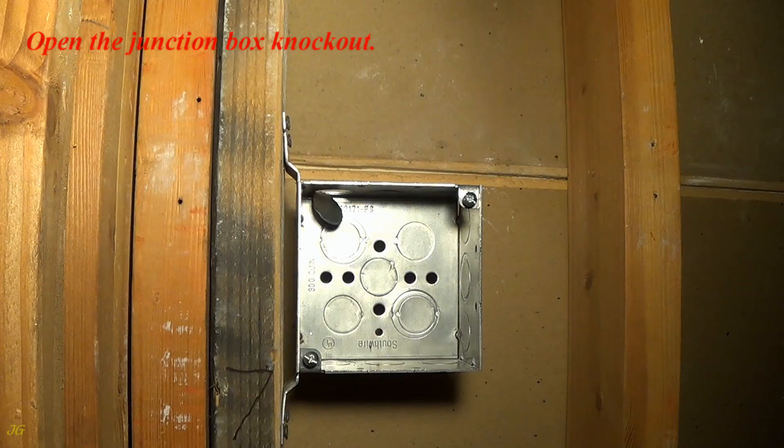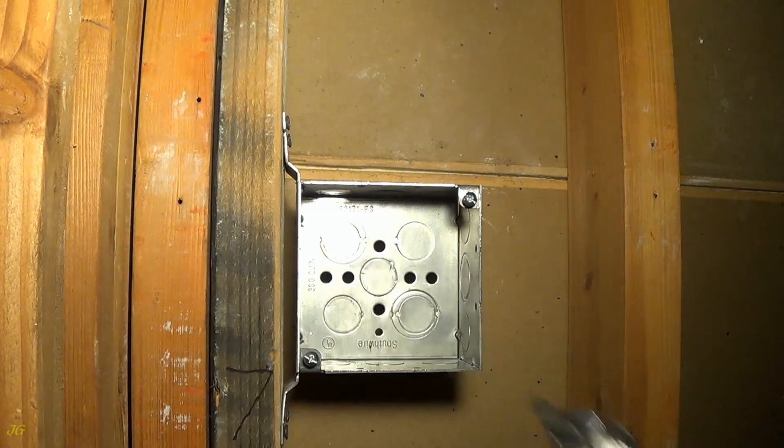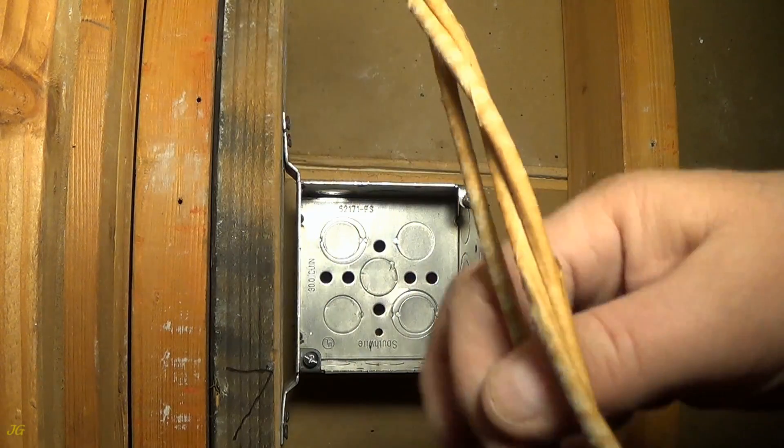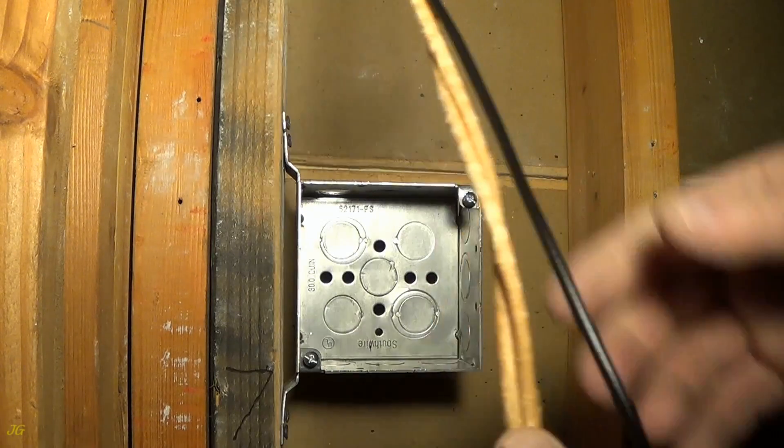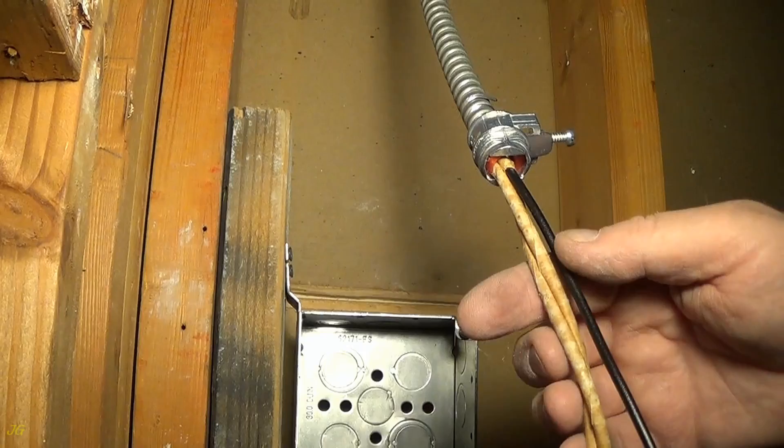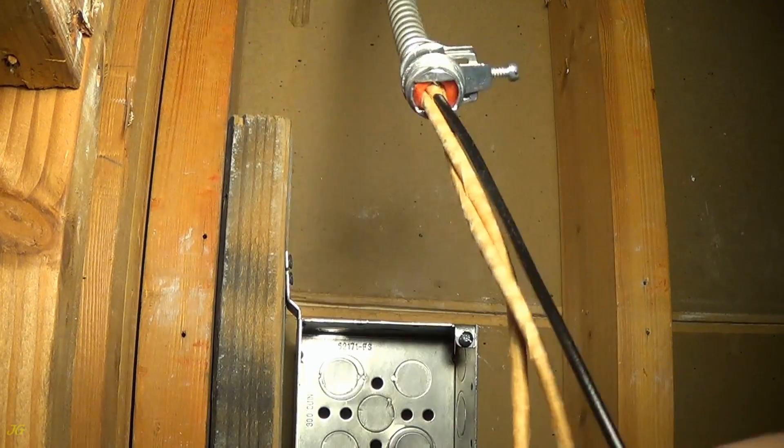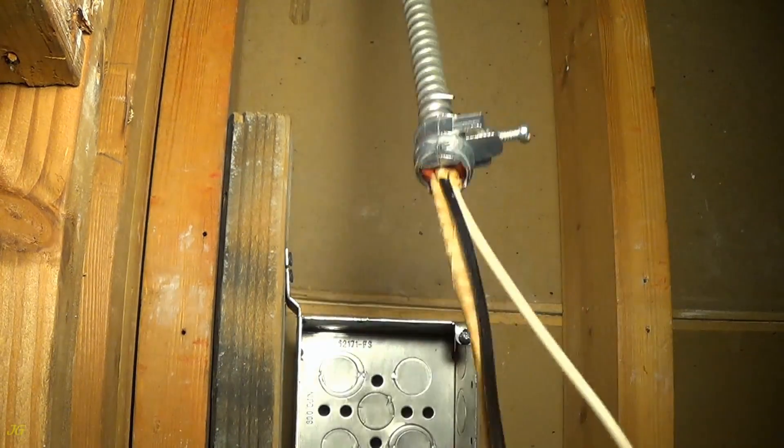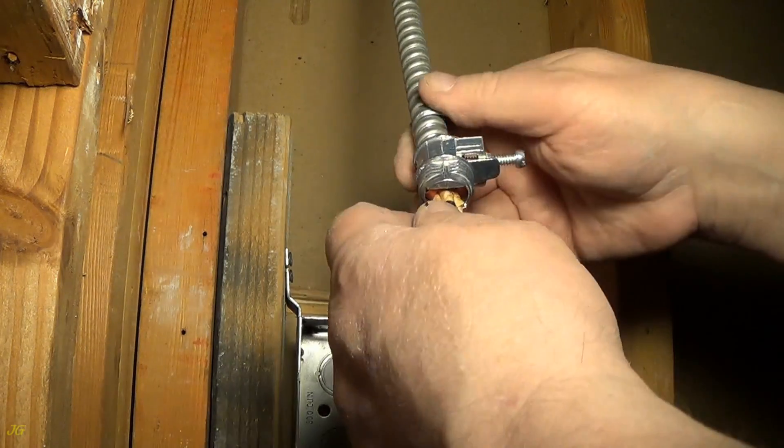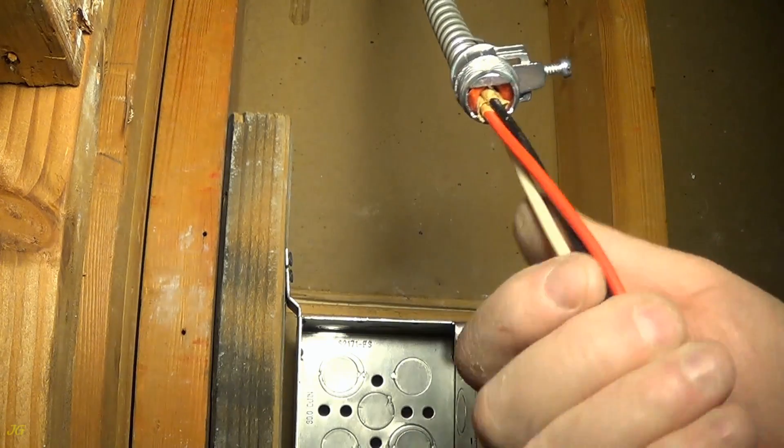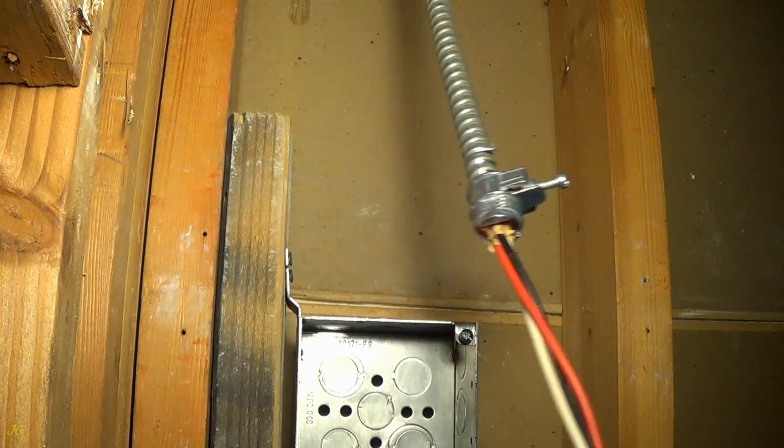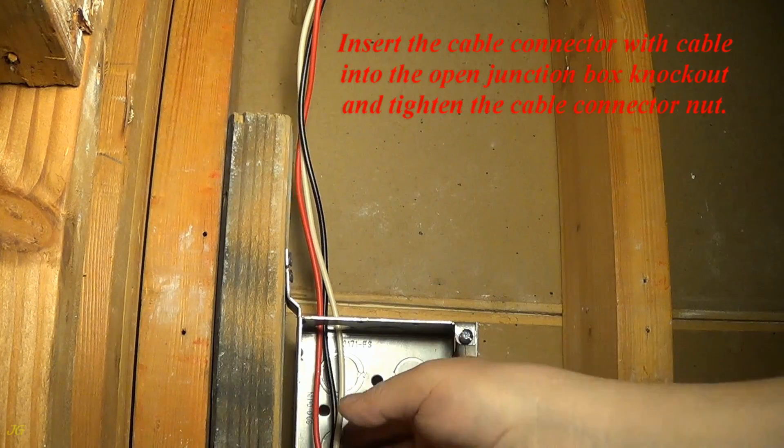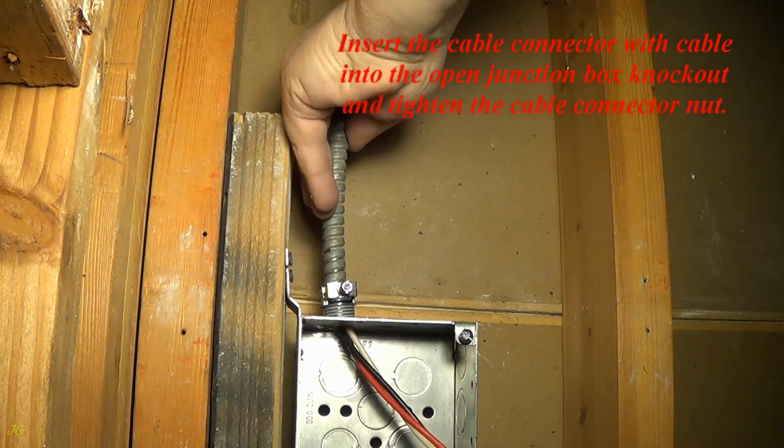Open the junction box knockout. Insert the cable connector with cable into the open junction box knockout and tighten the cable connector nut.